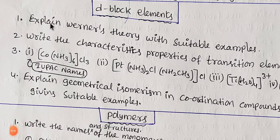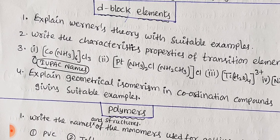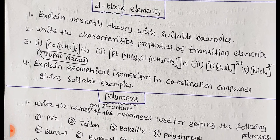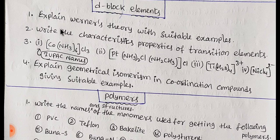Next one is D and F block elements. First question: explain Werner's theory with suitable examples. Second: characteristic properties of transition elements. Third: IUPAC names — IUPAC names is very important. We have two questions there. Next: explain geometrical isomers in coordination compounds, giving suitable examples. So here you have 4 important questions maximum for D and F block and coordination compounds.